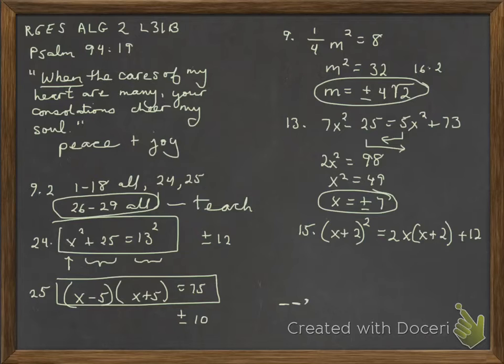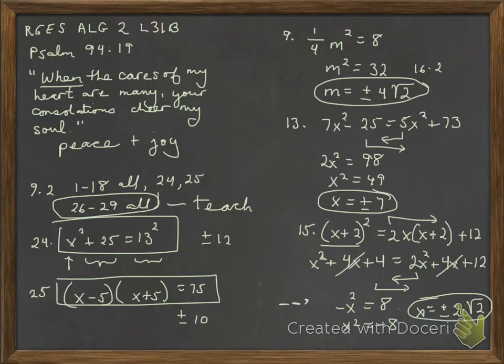For number 15, I'll foil on the left. I'll distribute on the right here. And then I'll gather like terms. Notice when you have the same thing on the left and the right, you just want to cancel that out. I'll pull my x's to the left and my number to the right. Just recall when we're at this stage here, we're taking the square root of a negative, so that would be i, and 8, the square root of 8, simplifies to 2, the square root of 2. We typically write the constant before the i.